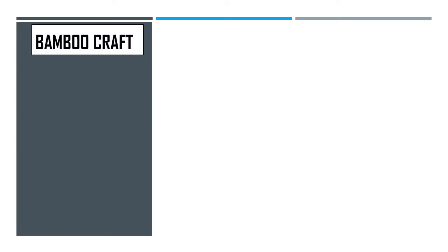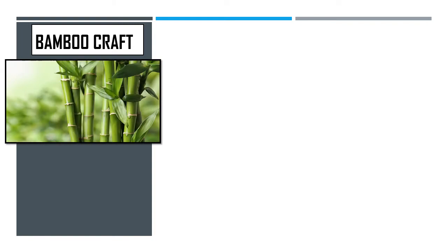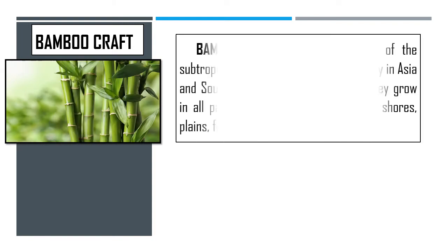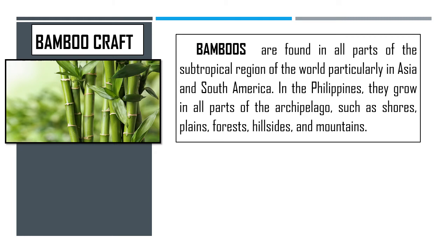What is a bamboo craft? Take a look at this picture — this is an example of a bamboo. Bamboos are found in all parts of the subtropical region of the world, particularly in Asia and South America. In the Philippines, they grow in all parts of the archipelago, such as shores, plains, forests, hillsides, and even mountains.